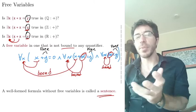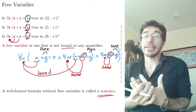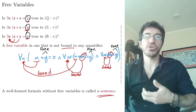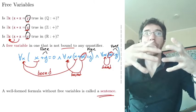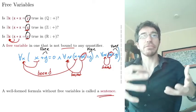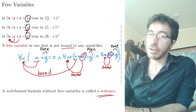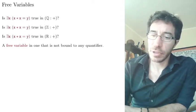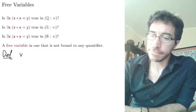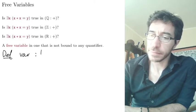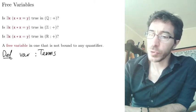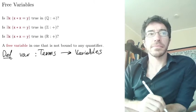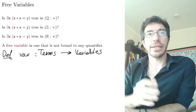Well-formed formulas are defined as strings of symbols closed under operations of combining formulas with connectives: and, or, implies, if and only if. We define the set of free variables using induction. First, we define a function — call it var — that goes from the set of terms to sets of variables. We do this by recursion, case by case depending on the term.